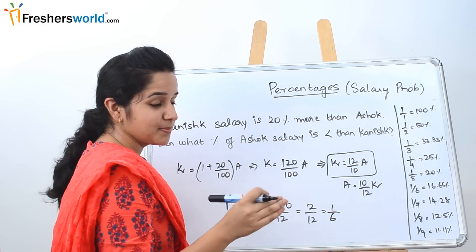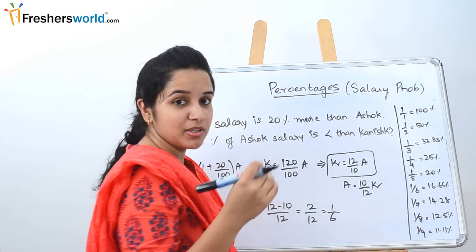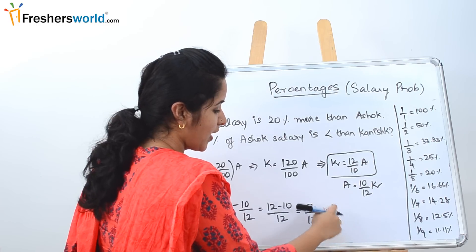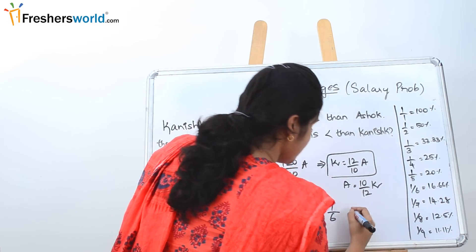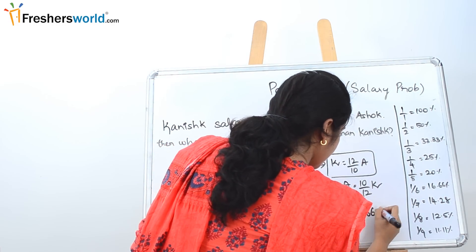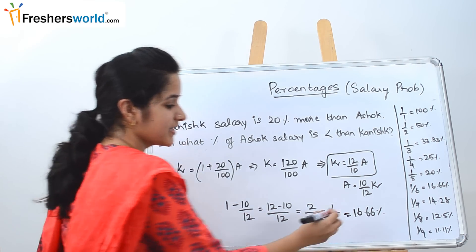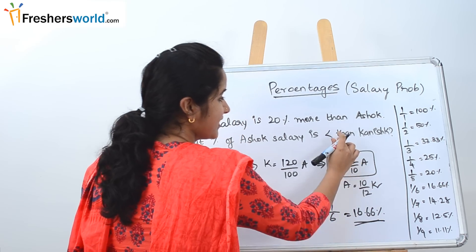As we know in the first part of percentages, I was telling you the importance of learning the fractions from 1 by 1 to 1 by 9. So 1 by 6 is nothing but 16.66%. So we know that Ashok's salary is 16.66% less than Kanish.